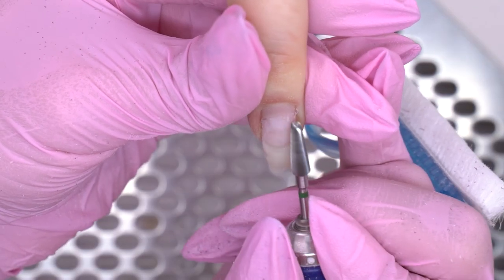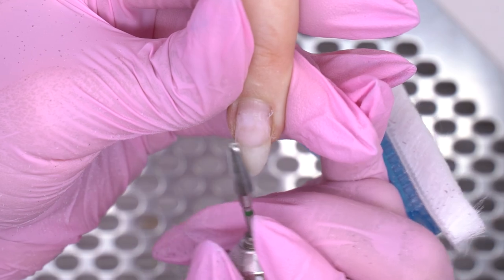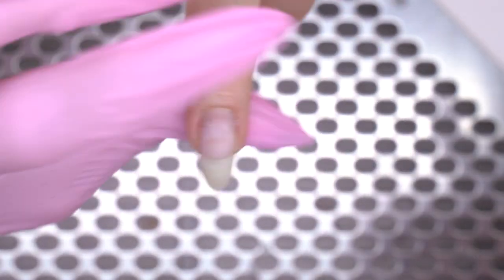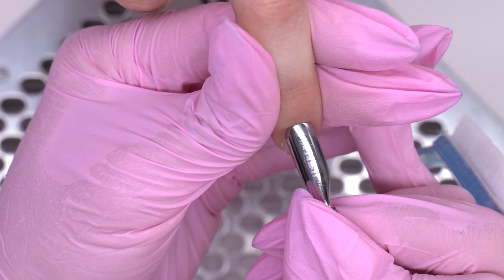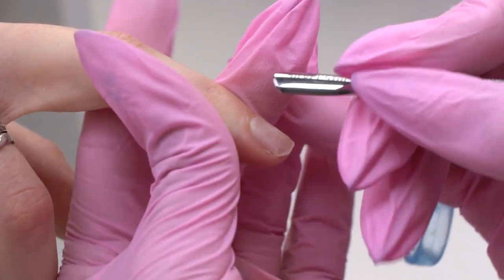If there are no liftings, of course. If there are some, then remove the base coat completely. If you are a beginner and afraid to damage the nail plate, then keep a thin layer and remove it with a nail file.